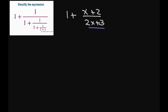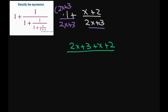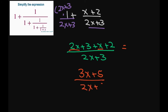We have 1 plus x plus 2 divided by 2x plus 3. Again, we want the common denominator, so we put 2x plus 3 there and multiply the numerator by 2x plus 3. This gives us 2x plus 3 plus x plus 2 divided by 2x plus 3, which simplifies to 3x plus 5 divided by 2x plus 3. And that's your final simplification. Thank you, have a nice day!